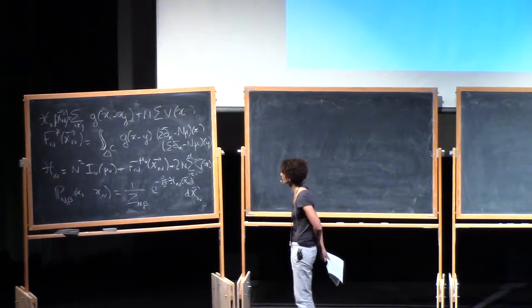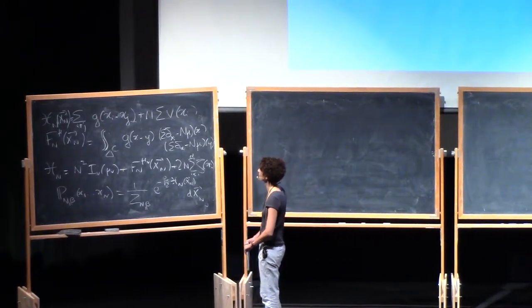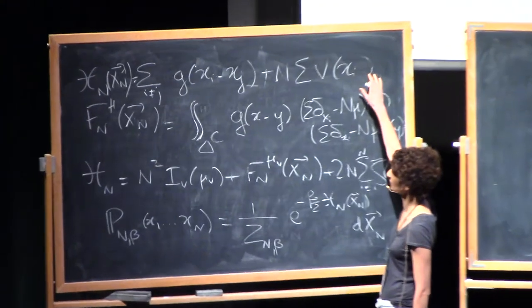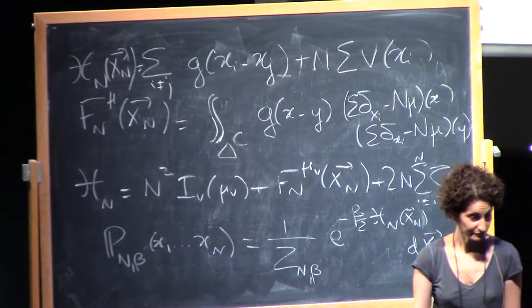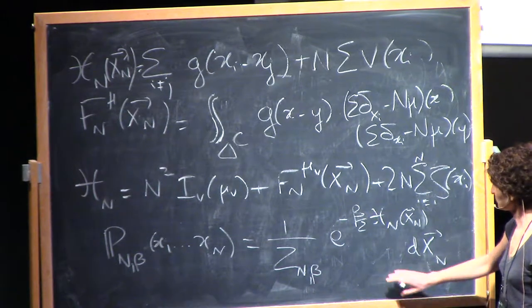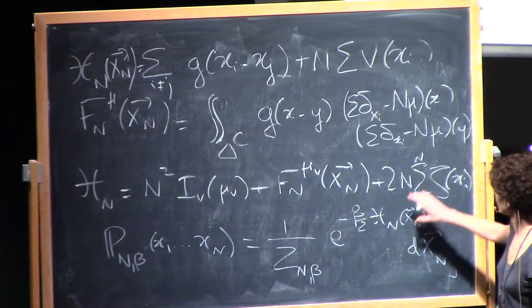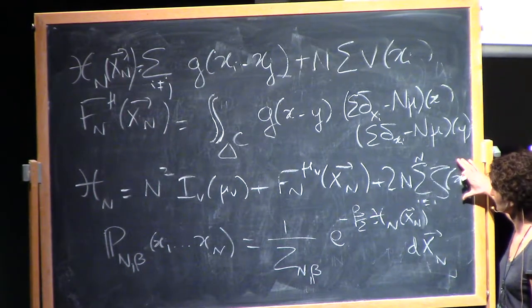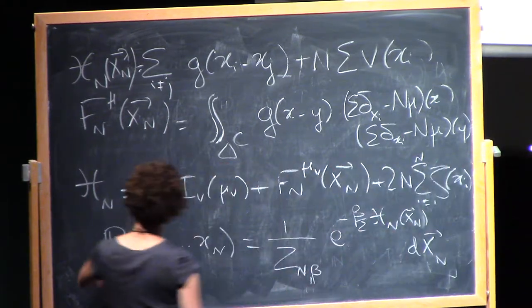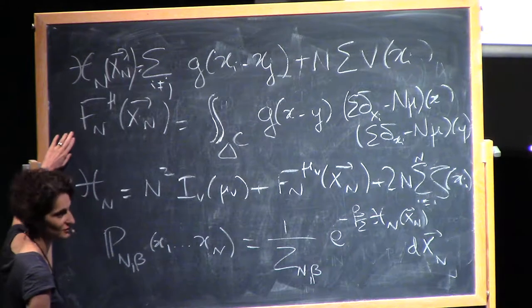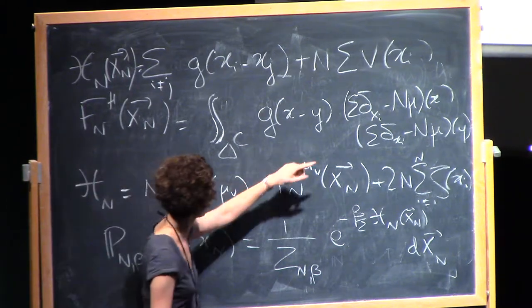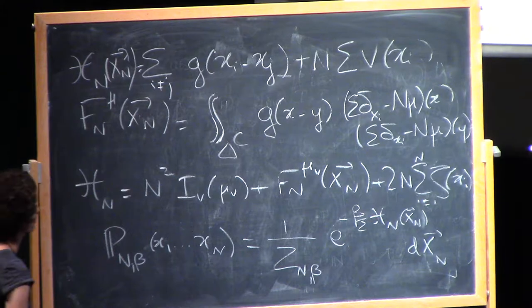I've put back on the board the quantities that we are dealing with. So this is the energy with G the Coulomb or log kernel. This is the Gibbs measure, and we have seen that we have a splitting of the energy in this form with the next order energy, which is just this quantity here — the sort of self-interaction of the fluctuations, away from the diagonal.